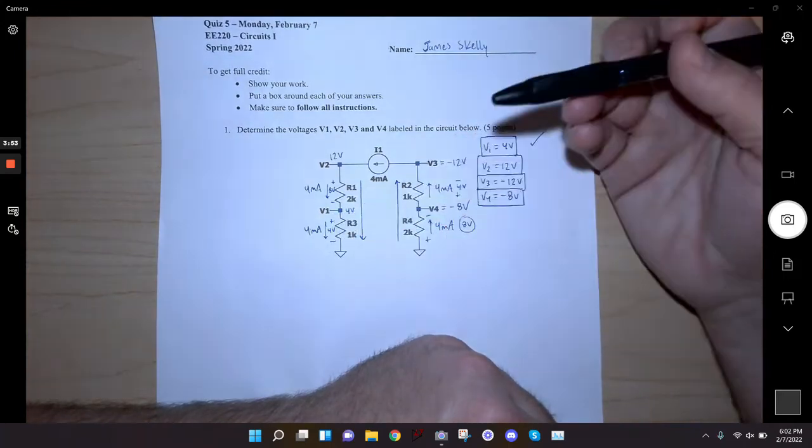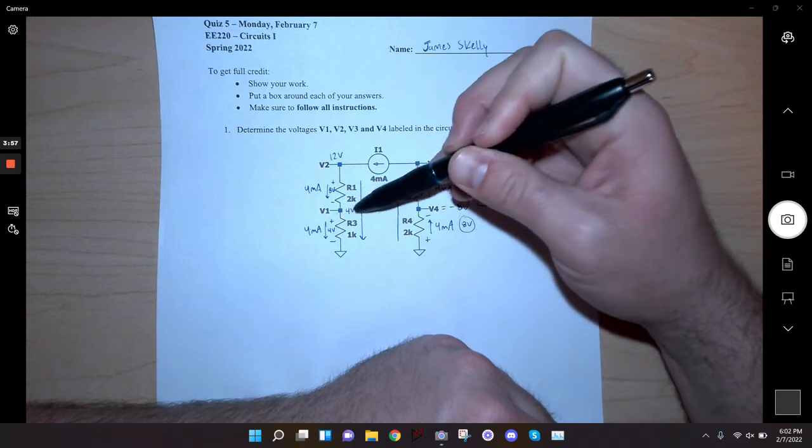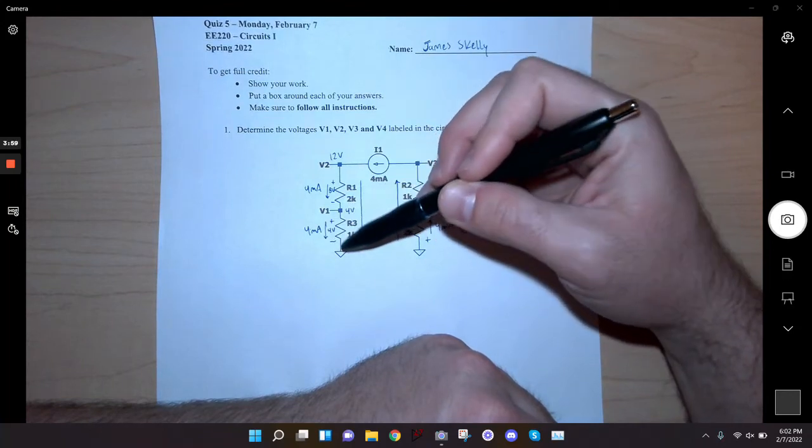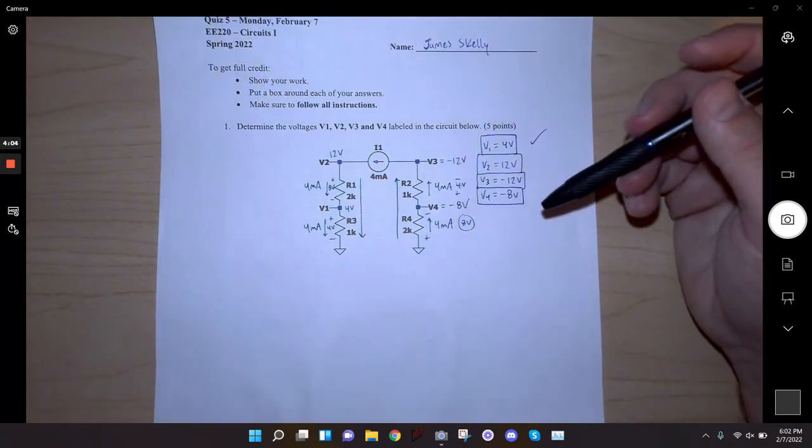When resistors are connected to ground, it's really easy because the voltage on one side of the resistor is just the drop across the resistor, because the other side's at zero. A lot of people are still messing that up.